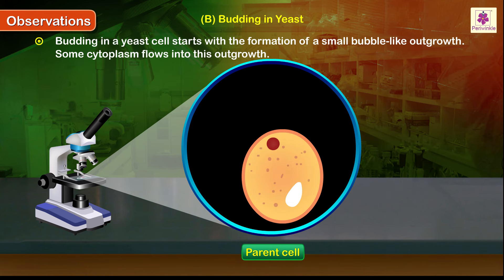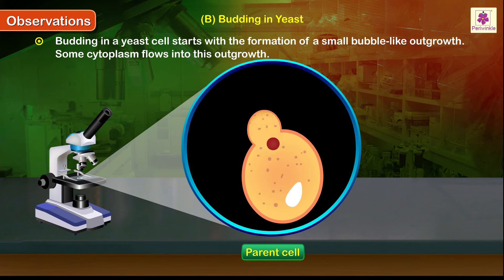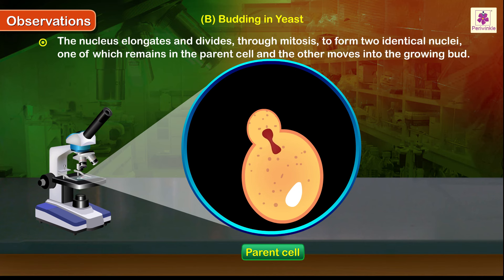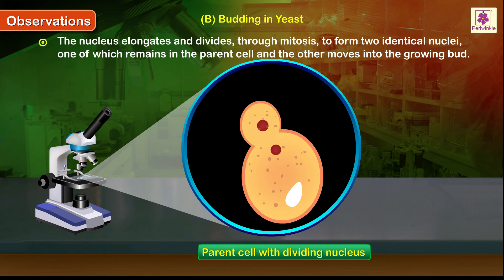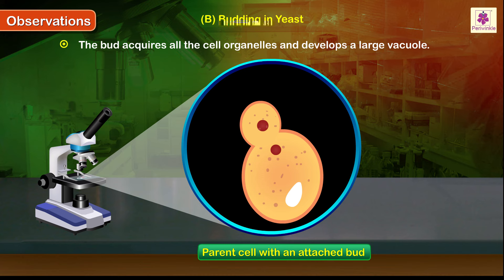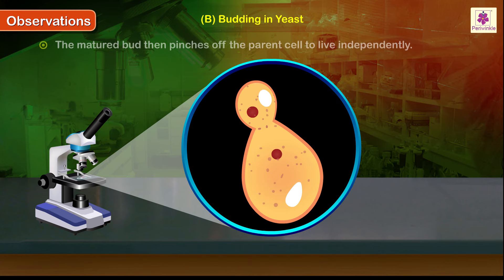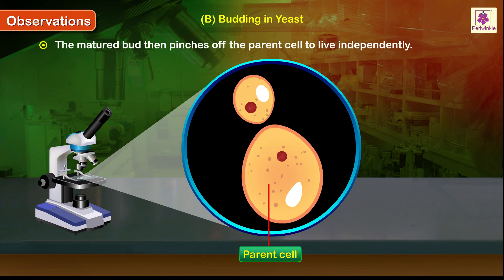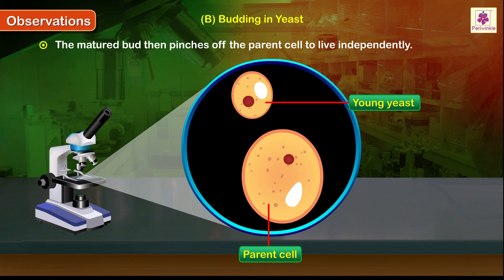Budding in a yeast cell starts with the formation of a small bubble-like outgrowth. Some cytoplasm flows into this outgrowth. The nucleus elongates and divides through mitosis to form two identical nuclei, one of which remains in the parent cell and the other moves into the growing bud. The bud acquires all the cell organelles and develops a large vacuole. The matured bud then pinches off the parent cell to live independently.